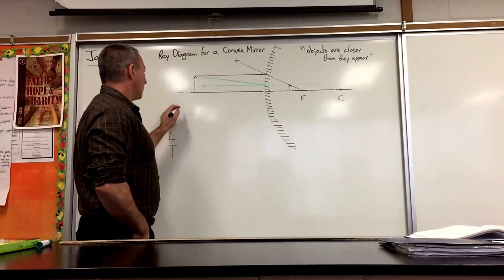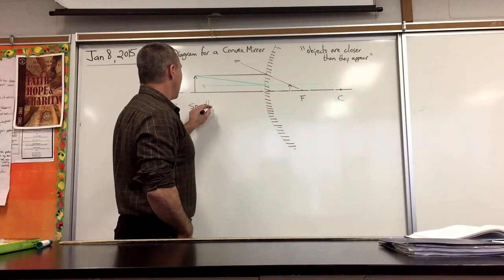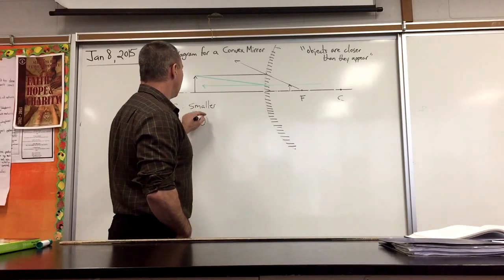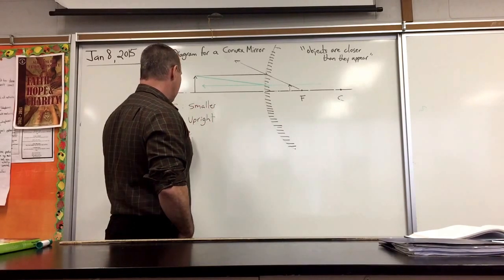The size, in the case of a convex mirror, is always smaller. The attitude is always upright. Location is always behind the mirror, behind the reflective surface.